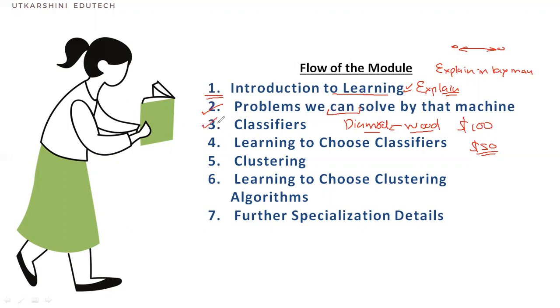Then we'll discuss classifiers. This is one huge category of machine learning. Machine learning is divided into three: regression, classification, and clustering. If you don't understand these terms, don't worry—we'll discuss them in detail. We'll understand what classifiers are, how to choose which classifier to use, then clustering and how to choose clustering algorithms. There will be a brief about further courses in this specialization.